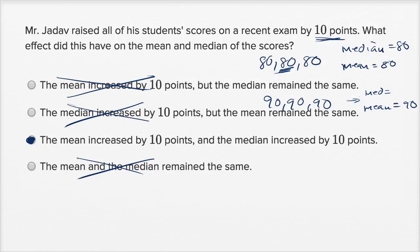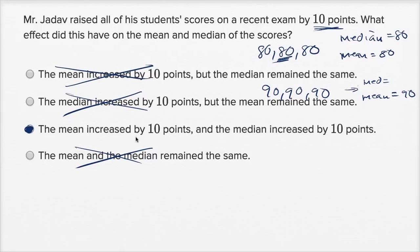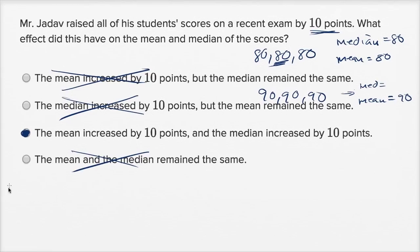Now, I'm sure a lot of you probably want a little bit more of a rigorous proof that we could say, hey, for any combination of scores, the mean would increase by 10 points and the median would increase by 10 points. And for that, we could do a little bit of a justification, borderline proof right over here. So let's just imagine, this is the score one, and then this right over here is the median score, and then we keep going, and then this is the nth score right over there.